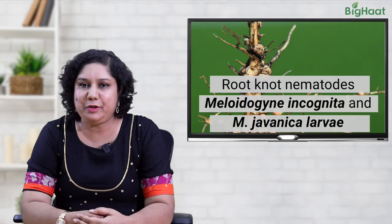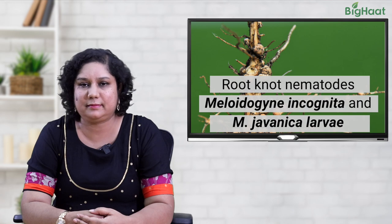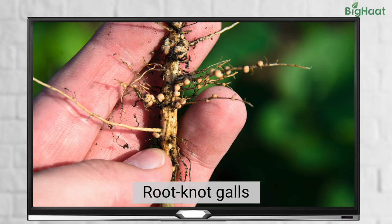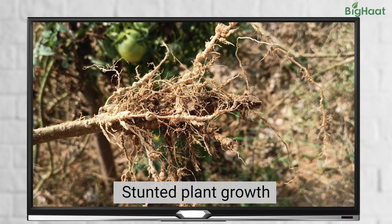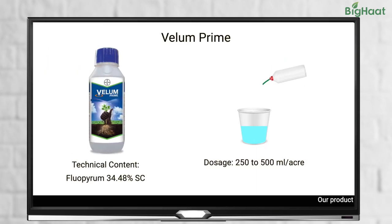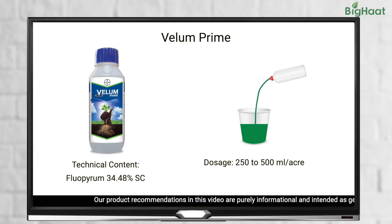Another pest that you need to watch out for during the fruiting stage are root knot nematodes. These infest the plant roots, causing root knot galls and stunted growth of the roots. Further, they drain the photosynthate and nutrients of the plants, resulting in the inability of the roots to uptake nutrients and water through the vascular bundles, resulting in the death of the plant. To control root knot nematodes, use 250 to 500 ml of Vellum Prime per acre.